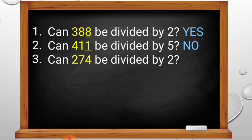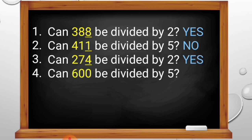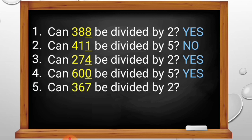Number 3: Can 274 be divided by 2? The last digit of 274 is 4, which is an even number, therefore 274 can be divided by 2 — the answer is yes. Number 4: Can 600 be divided by 5? The last digit of 600 is 0, therefore 600 can be divided by 5 because all numbers ending in 0 are divisible by 5. Number 5: Can 367 be divided by 2? The last digit of 367 is 7, therefore 367 cannot be divided by 2.